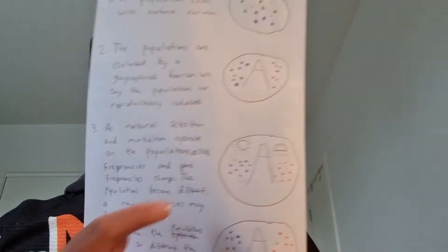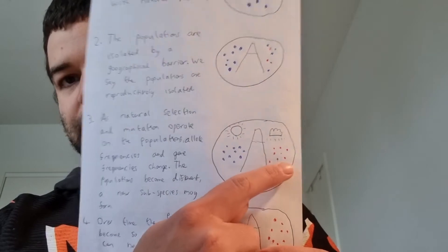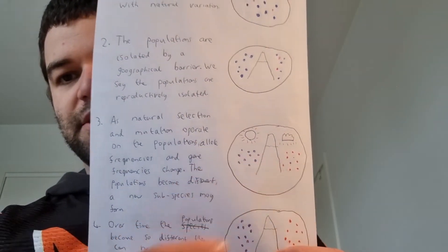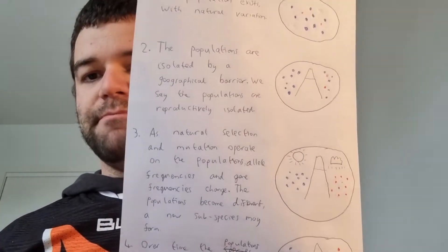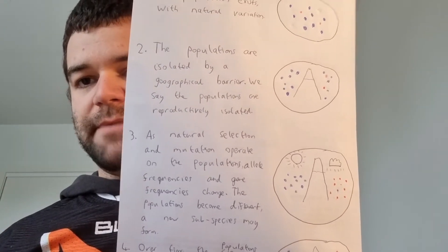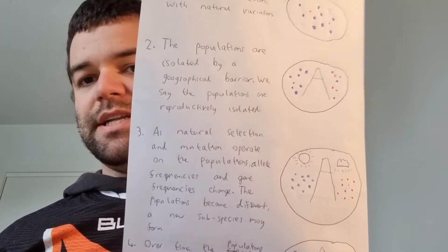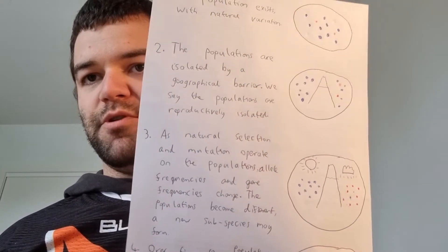As you can see in the picture, I've drawn this population getting more red dots and this population getting more blue dots, representing them becoming more different over time. At that point, a new subspecies may be forming.